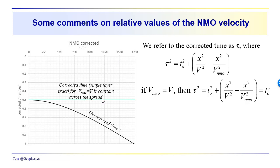We're going to take a look at the one event where we're justified in assuming that the NMO velocity is almost equal to the average interval velocity. We calculate the corrected time: tau-squared equals t₀-squared plus x-squared over v-actual-squared minus x-squared over V-NMO-squared. If the V-NMO is exactly equal to v-actual, then these two terms cancel out — tau-squared equals t₀-squared plus x-squared over v-squared minus x-squared over V-NMO-squared — and since these two velocities are equal, this is just equal to t₀-squared, so we've done a perfect job.